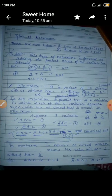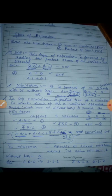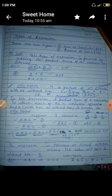Another definition of minterm in an SOP expression: a product term of n variables, in which each of the n variables appears exactly once — either with or without complement — is known as a minterm.